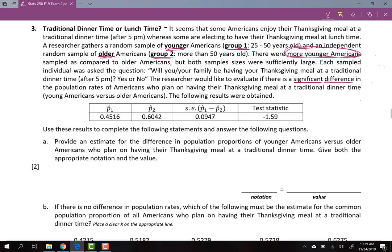They gave us the sample proportion for group 1, 0.4516, the sample proportion for group 2, 0.6042, the standard error, and the test statistic. We're going to answer each of these questions, starting with question A.